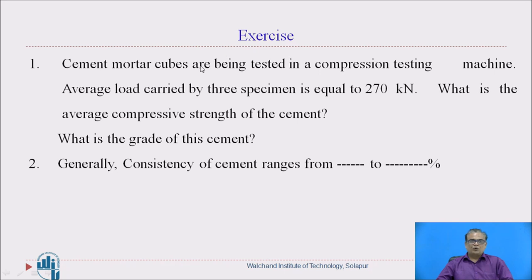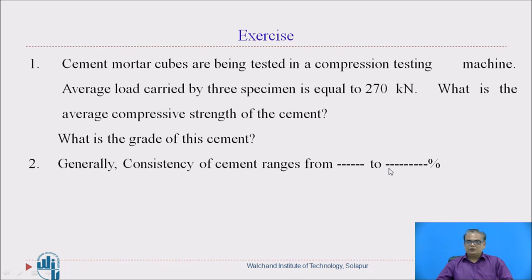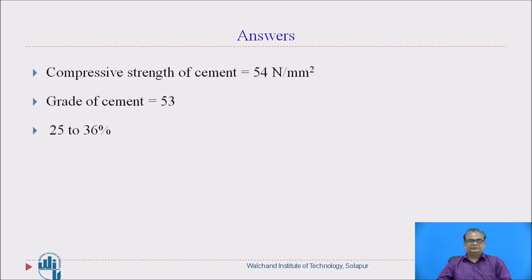Here is an exercise for you. Cement mortar cubes are being tested in a machine. The average load carried by the specimen is 270 kN. What is the average compressive strength of this cement and what is the grade? Also, consistency of cement ranges from what percentage to what percentage? Answers: Compressive strength comes to 54 N/mm², the grade of cement is 53 because the strength is more than 53 N/mm², and consistency of cement ranges from 25 to 36 percent.